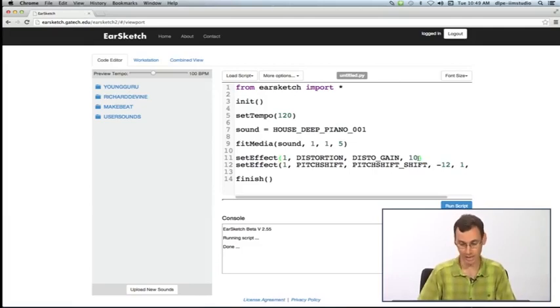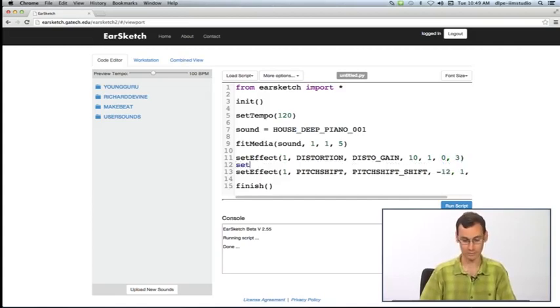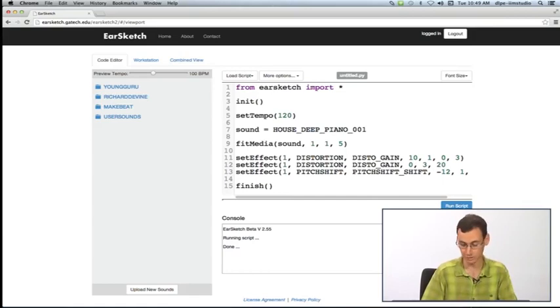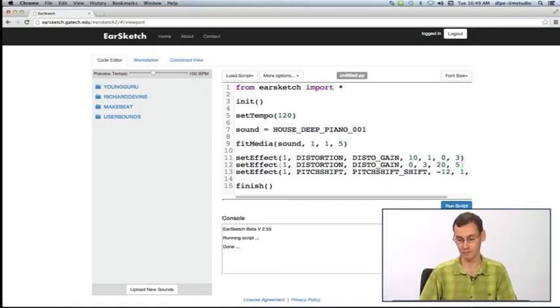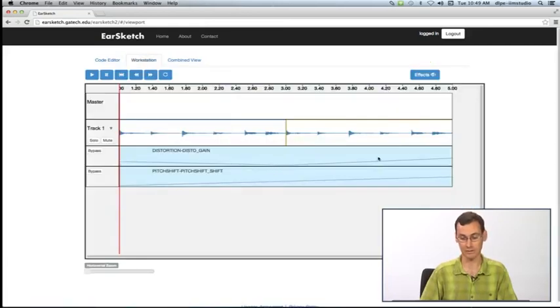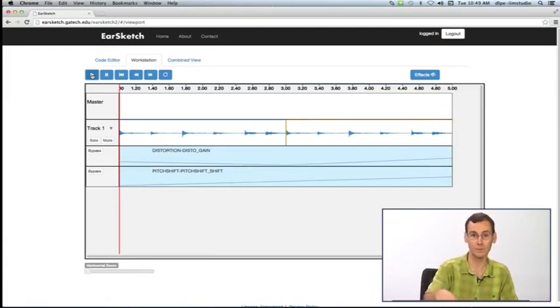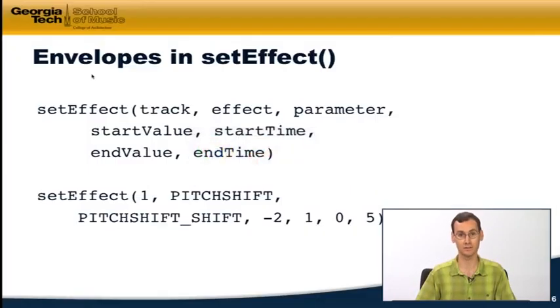Now, what about our distortion? Maybe I want to start with ten at measure one, but by the time we get to measure three, I want it to go down to zero. And then maybe I want to do another ramp with my distortion between measures three and five. So I'm specifying again track one, the effect DISTORTION, the parameter DISTO_GAIN. I want to start at zero, no distortion, measure three, but maybe go up to tons of distortion, say 20, by the time we get to measure five. I can run that script, and then you can see here we have a more complex curve where it's coming down and then it's going back up. So we can go ahead and listen to this. I'm sure you agree that I totally butchered this sound, but it was for the point of showing these dramatic curves and these envelopes that we could draw in the effects lanes through multiple calls to setEffect.